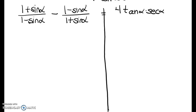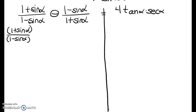One of the hints on page 197 is to actually perform the indicated operation, and the indicated operation here is subtraction. So we need a common denominator, which is really nice, because one of the other hints on that same page is to multiply by your conjugate. So I'm doing both — I'm going to multiply by the conjugate so that I find a common denominator.